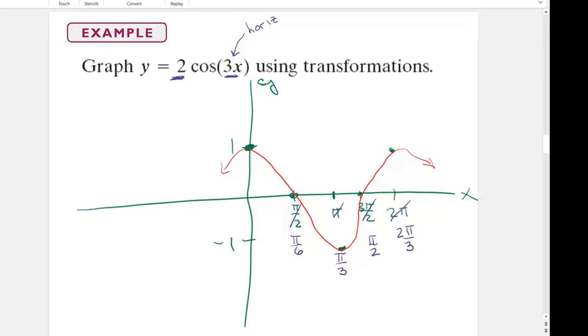Which is even less than pi, right? If I went all the way to two pi, I would have three of these curves because I would be able to get three of these in between zero and two pi. Does that make sense? Yeah, all right, good.